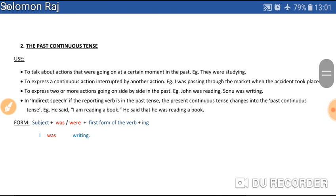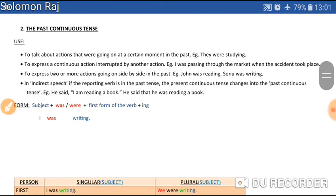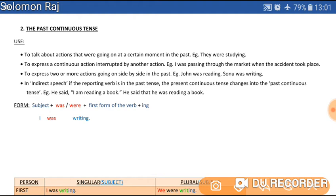Let's continue with the past continuous. The second form of the past tense is the continuous tense. It is used to talk about actions that were going on at a certain moment in the past — for example, 'they were studying.' Secondly, it is used to express a continuous action interrupted by another action.